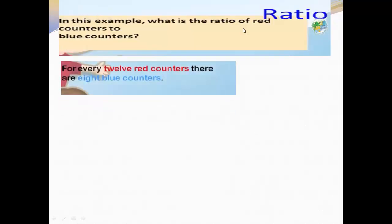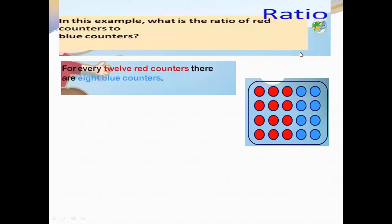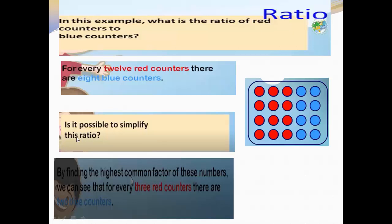In this example, what is the ratio of red counters to blue counters? For every 12 red counters, there are 8 blue counters. Is it possible to simplify this ratio? By finding the highest common factor of the two numbers, we can see that for every 3 red counters, there are 2 blue counters.